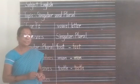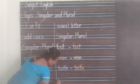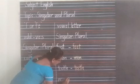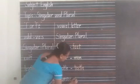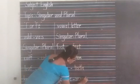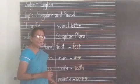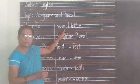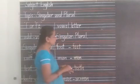Next example: W-O-M-A-N, woman. Woman is singular. You change the vowel letter — W-O-M-E-N, women. Women is the plural form. These are the vowel-change rules to make singular nouns into plural nouns.